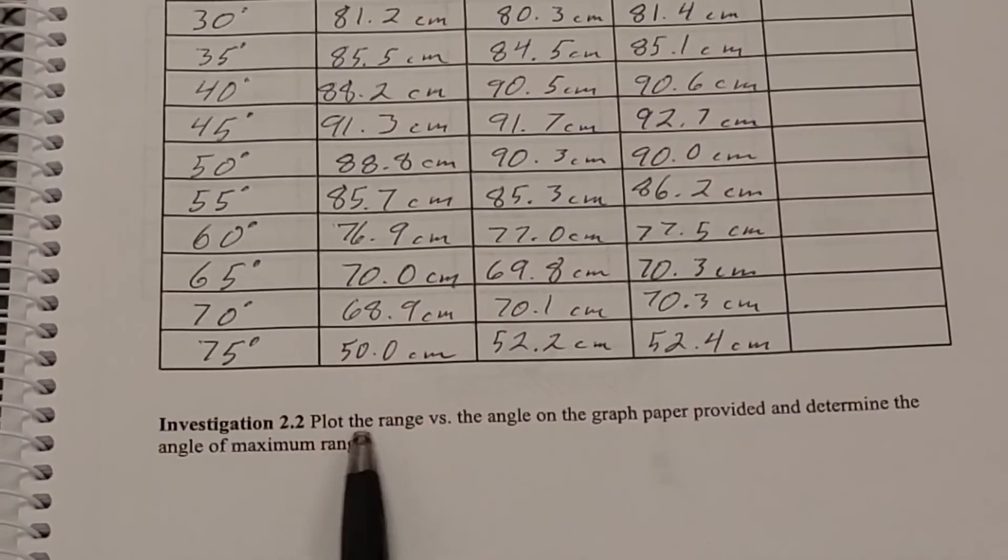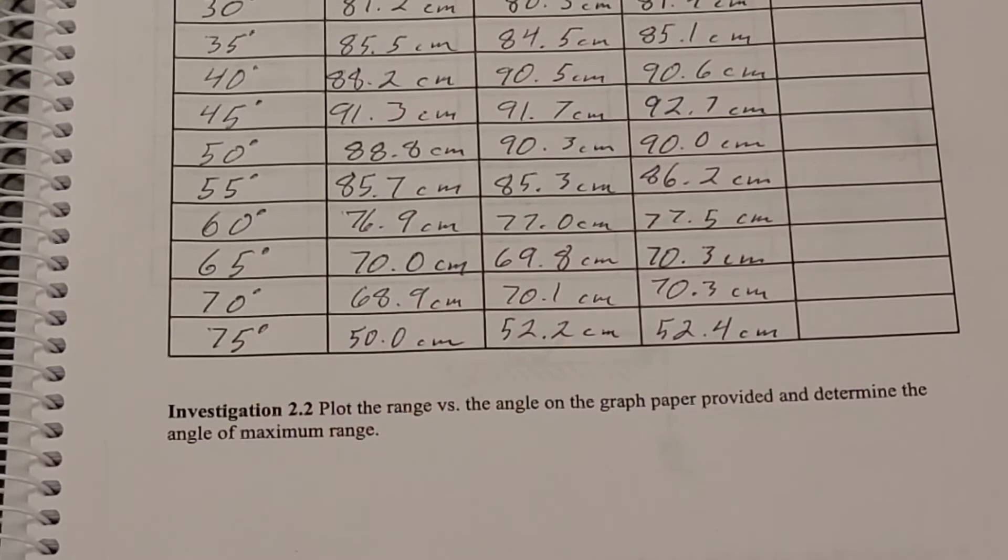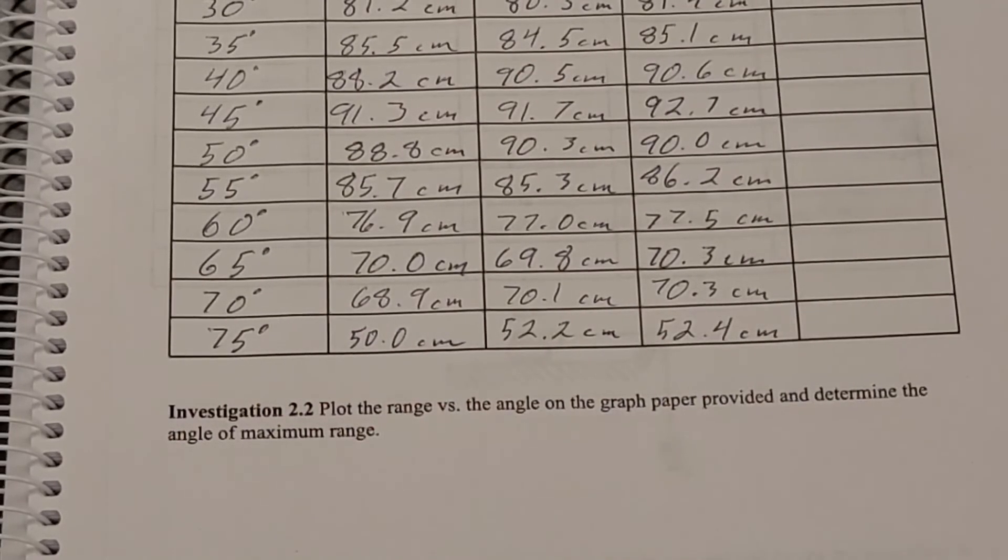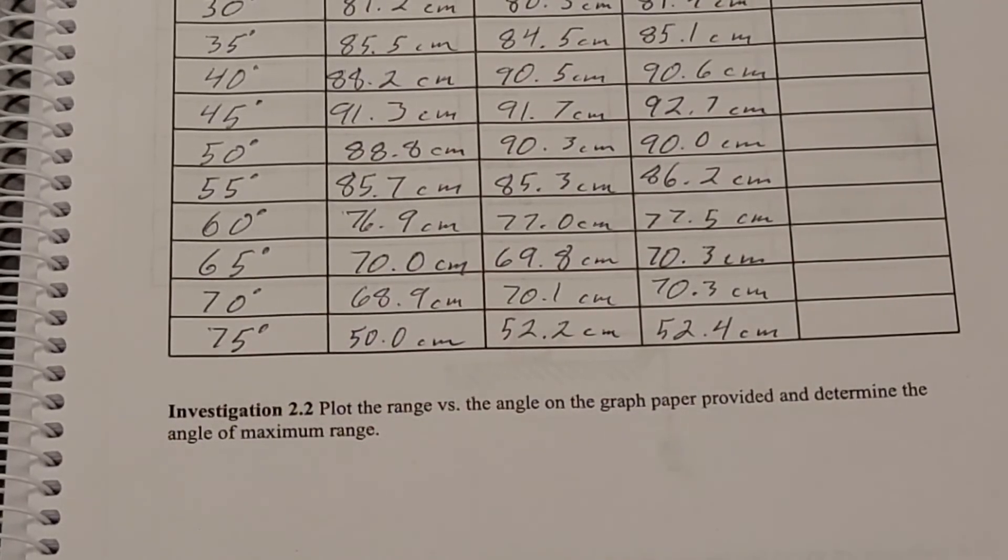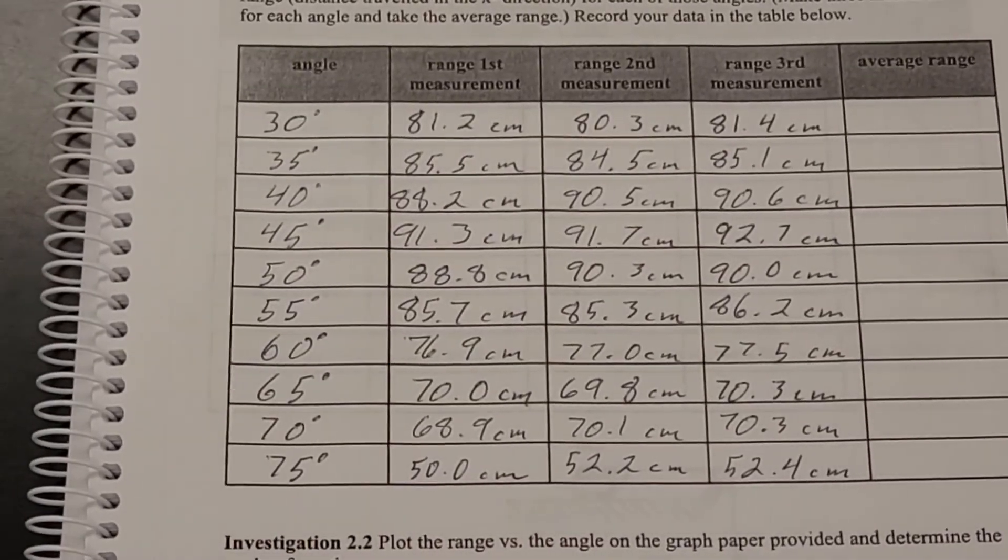And it says to plot, there is graph paper provided to you at the end of the lab manual. The last few pages in the lab manual are sheets of graph paper that you can tear out and copy your data onto and plot it. So once again, this is the data.